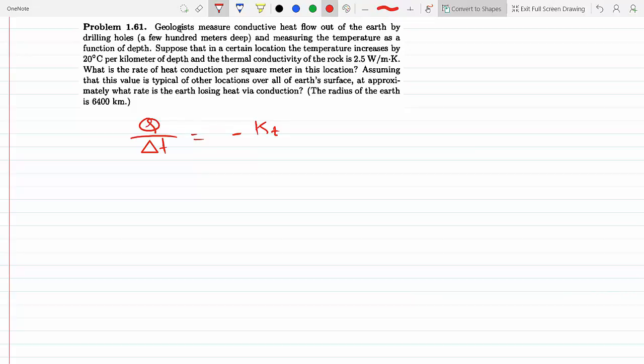Times the area times dT over dx. Okay, well this is our KT, it's given here. We know that we need this per area, so in other words I'm calculating Q over delta T per unit area, per one meter square.